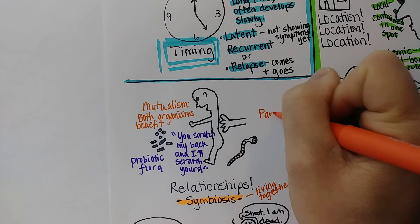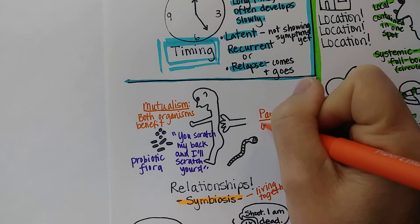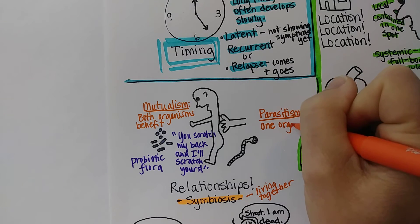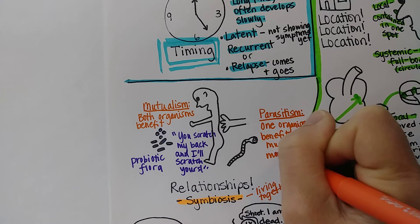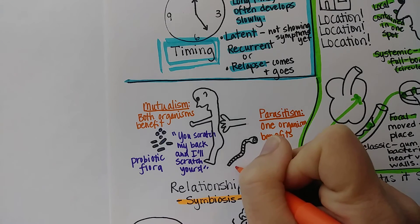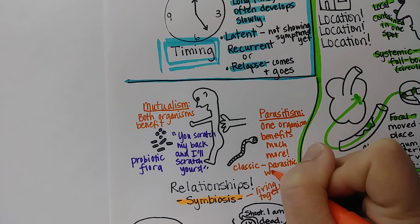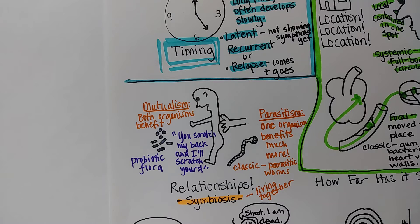Then there's parasitism — this is still a symbiotic relationship, but it's when one organism benefits and the other doesn't, or one benefits a lot more. A classic example would be parasitic worms like a tapeworm: they get to live inside us and get nutrients. However, they actually give our immune system some calming signals and may help reduce the risk of autoimmune disease or allergies — this is an area of research.